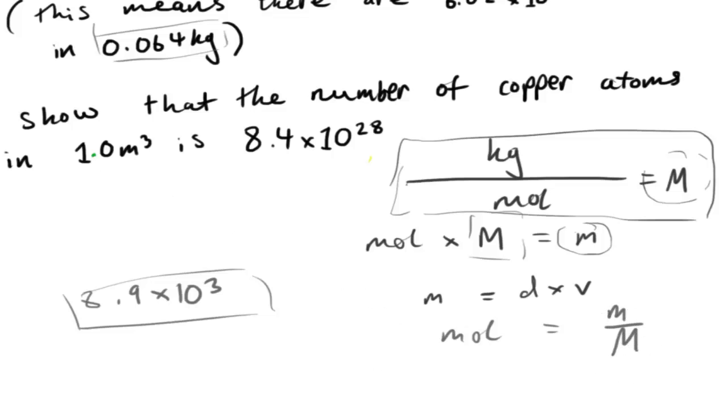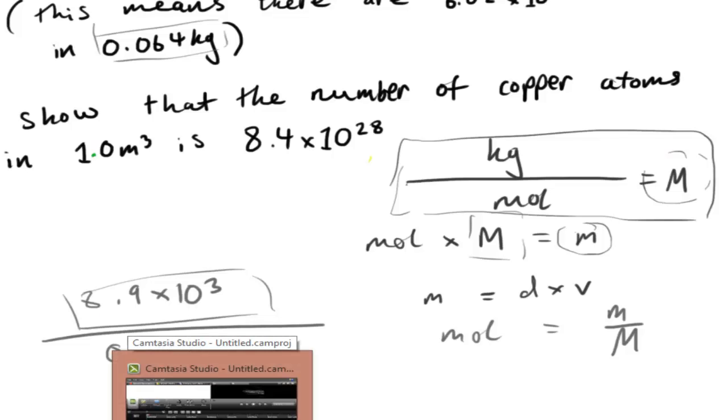This is just a simple rearrangement. And then we use the molar mass that we've got, so 8.9 times 10 to the 3 is our mass. We divide that by our molar mass which is 0.064, and this would give us our number of moles.